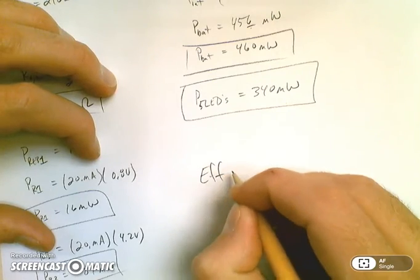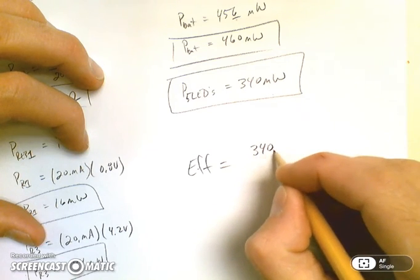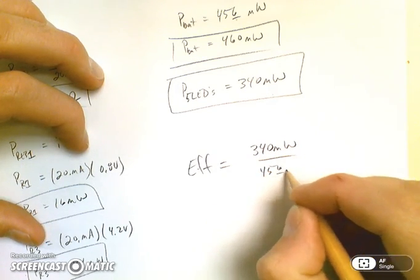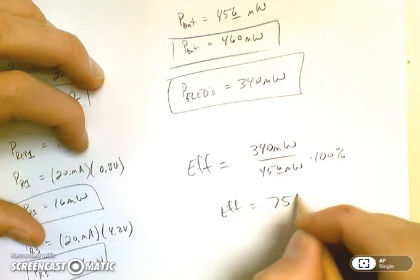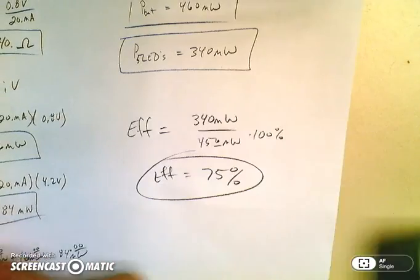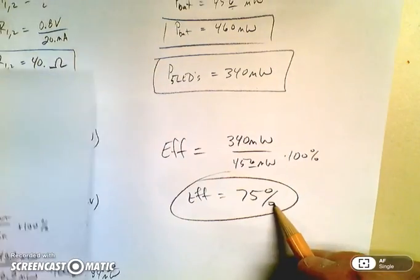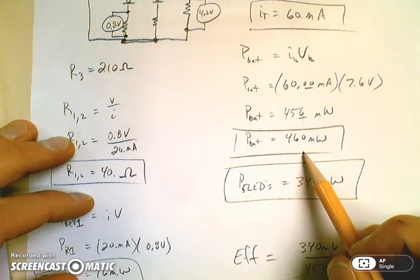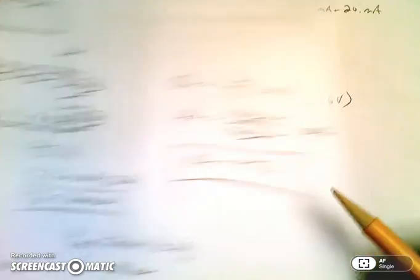So now we find the efficiency of this one. I'm going to take my LEDs and divide by my total. And here I get an efficiency of 75%. So when I look at the two options, between 75% efficiency and 45% efficiency, I'm going to go with this. And also look at the power draw of the battery—there's only 460 versus 760. So I have significantly less power.